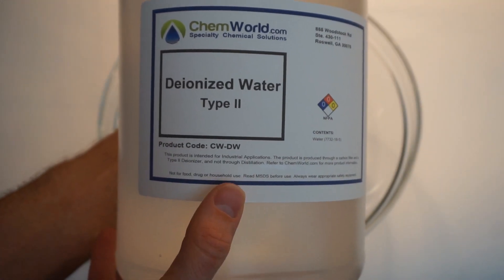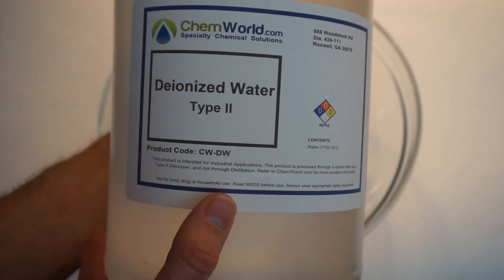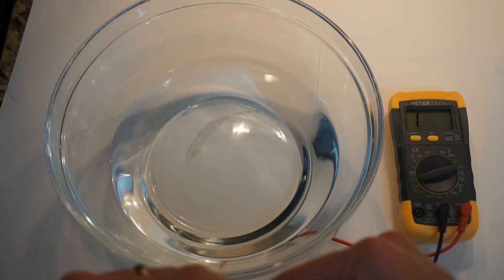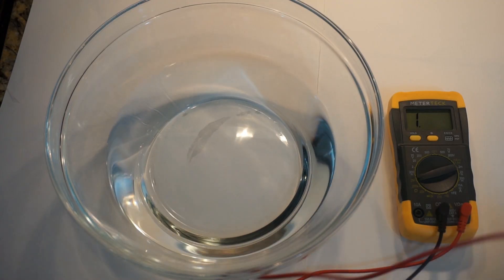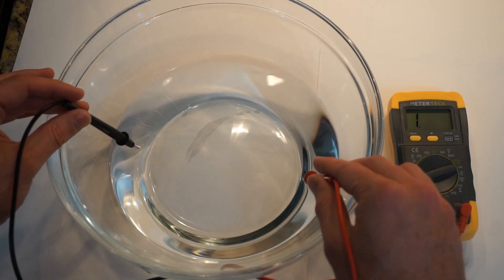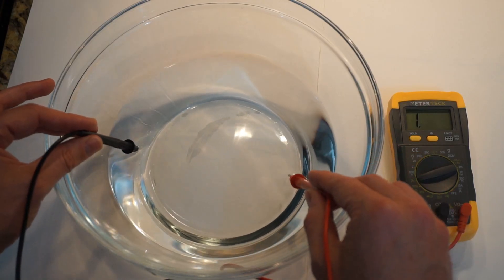So what I have here is Type 2 deionized water. This is water that has no ions in it. Now with my deionized water, it should be a much higher resistance.